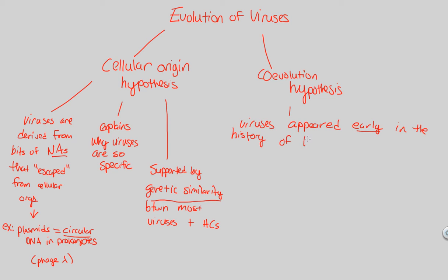In this hypothesis, viruses came even so early on that they came before the three domains themselves diverged. So, they came so early on that they came at the time before we had the divergence of bacteria versus archaea versus eukarya. That's our co-evolution hypothesis.